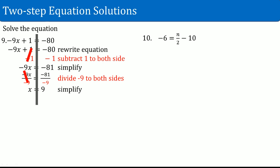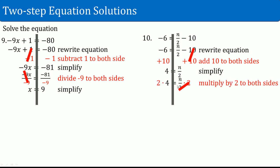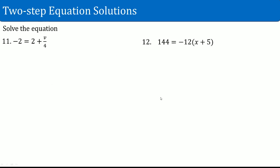Number ten: negative 6 equals n divided by 2 plus 10. Rewrite the equation and draw the line straight down. What is attached to the variable on the right-hand side: a divide by 2 and a minus 10. Deal with the outermost thing, the negative 10 — add 10 to both sides. That cancels out. Negative 6 plus 10 gives you 4. The n divided by 2 stays on the right-hand side. To get rid of divide by 2, multiply by 2. That cancels out. On the right-hand side you get n. On the left-hand side, 4 times 2 is 8.